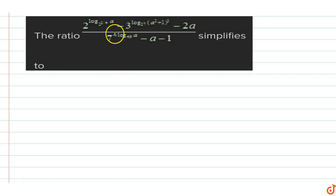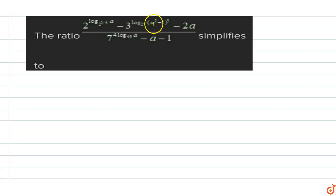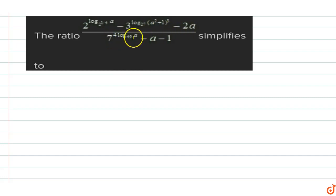In this question we have to find the ratio of 2 raised to power log of a, base 2 raised to power 1 by 4, minus 3 raised to power log of (a squared plus 1) whole cube base 27, minus 2a upon 7 raised to power 4 log a base 49, minus a minus 1. We need to simplify this ratio.